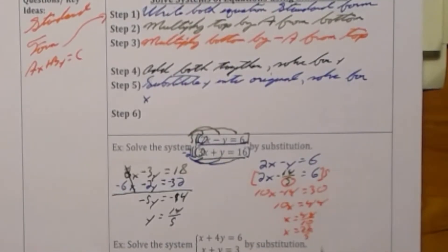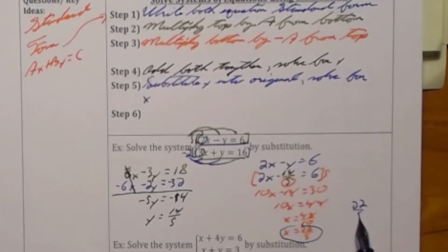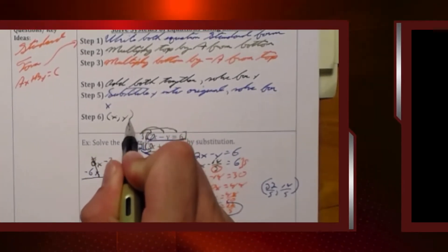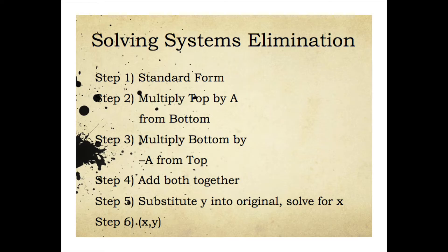I'm now going to write my x and y as an ordered pair or 22 over 5 comma 14 over 5. This is my last step to make an ordered pair of x and y. Here we see the steps to solving systems using elimination.